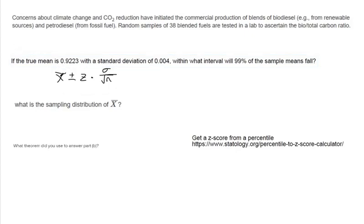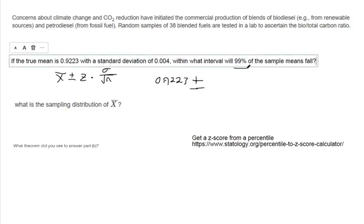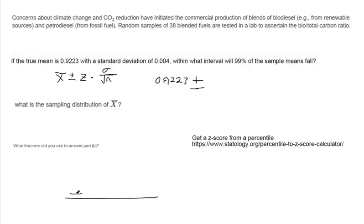So the mean, in this case they gave us a true mean, so it's actually mu. It's 0.9223. And then we need a Z-score, and the Z-score has to represent 99% of the data. So when you find a Z-score, we want a Z-score so that 99% of the data is between the negative value and the positive value of that Z-score. In other words, 99% is in the center, so that means you've got 0.5% over here and 0.5% over here. So a Z-score helps us figure out where 99% of the data will land in the center with anything being outside that 99% being in the tails.